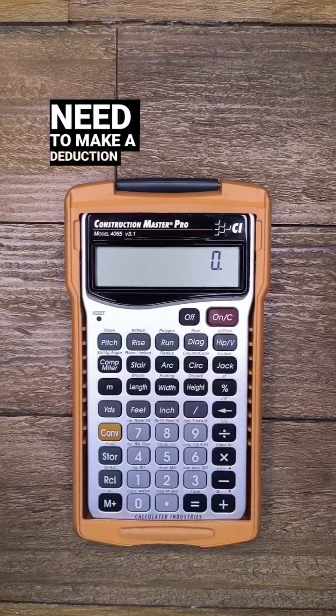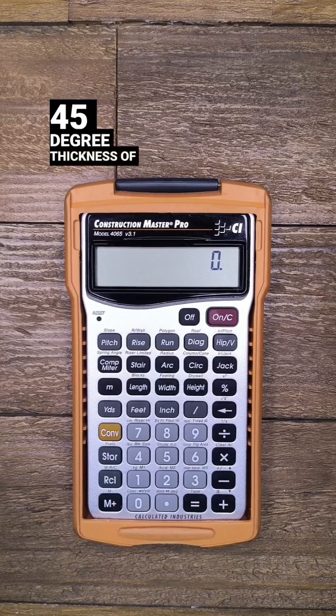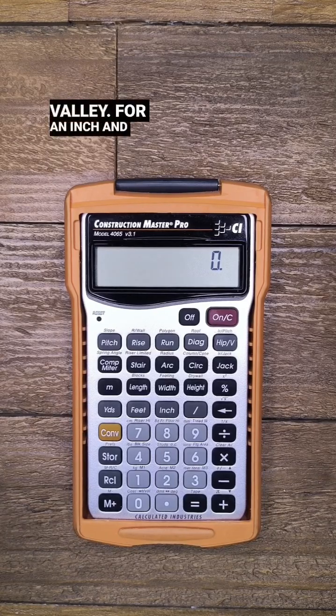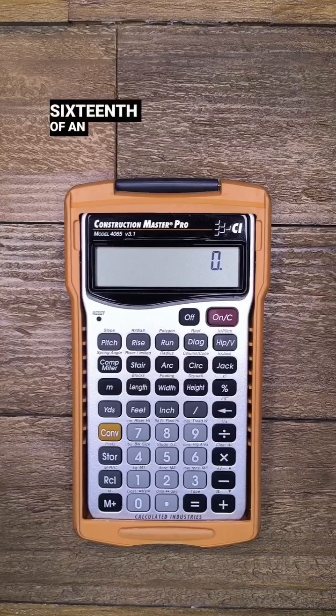First we need to make a deduction for the 45 degree thickness of the hip or valley. For an inch and a half thick rafter, that's one and one sixteenth of an inch.